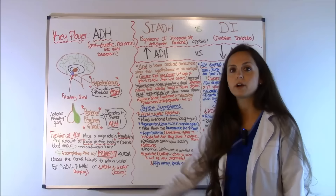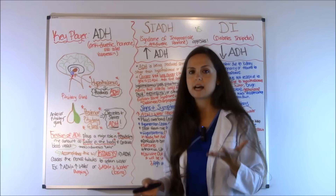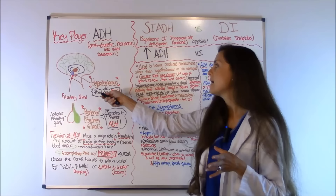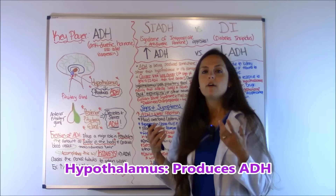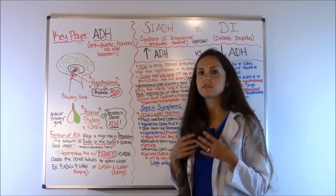In the brain you have your thalamus, and right below the thalamus you have the hypothalamus — that's where 'hypo' comes in, meaning below. The hypothalamus is responsible for producing this anti-diuretic hormone, and it also plays a role in thirst. Whenever you get thirsty, your hypothalamus kicks in and says, 'Let's make the body have the urge to get something to drink.'